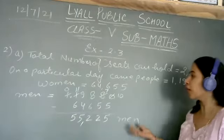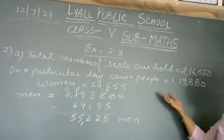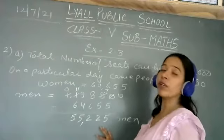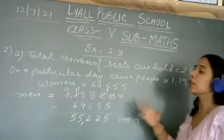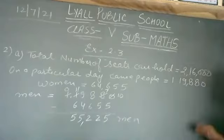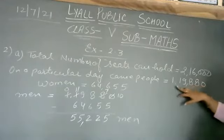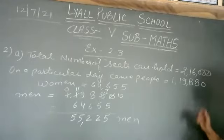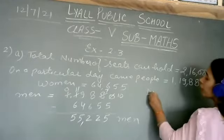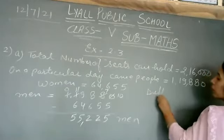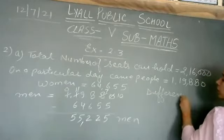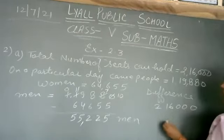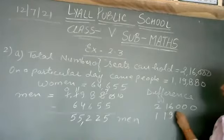So the number of men is 55,225 and the number of women is 64,655. Next, to find how many seats were vacant, we find the difference between total seats and people who attended: 2,16,000 minus 1,19,880.